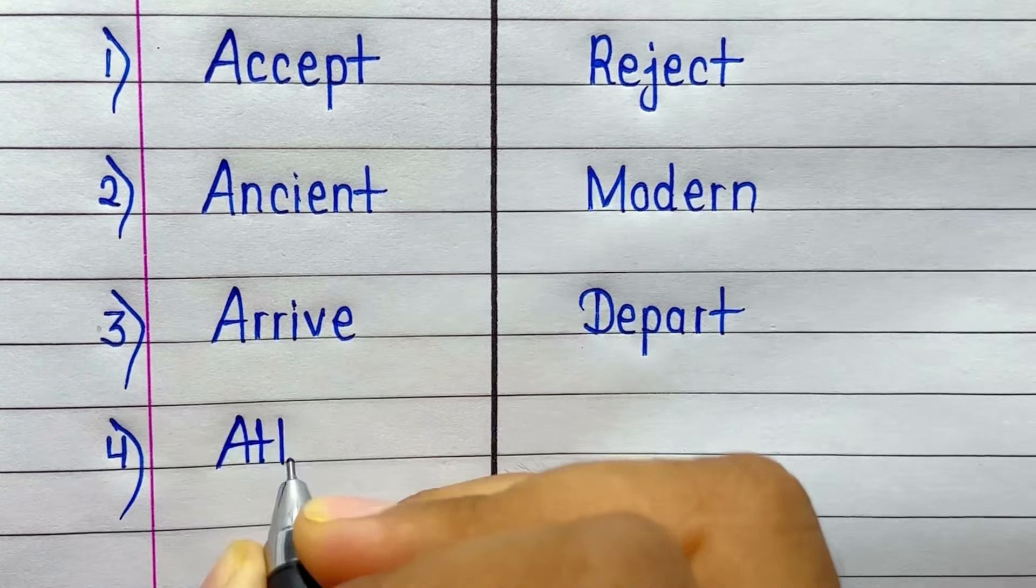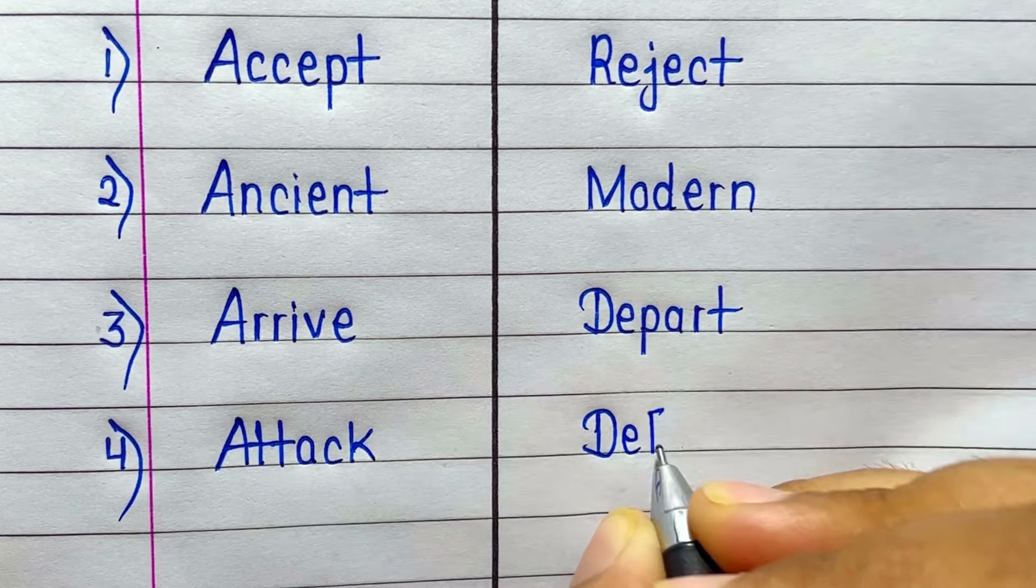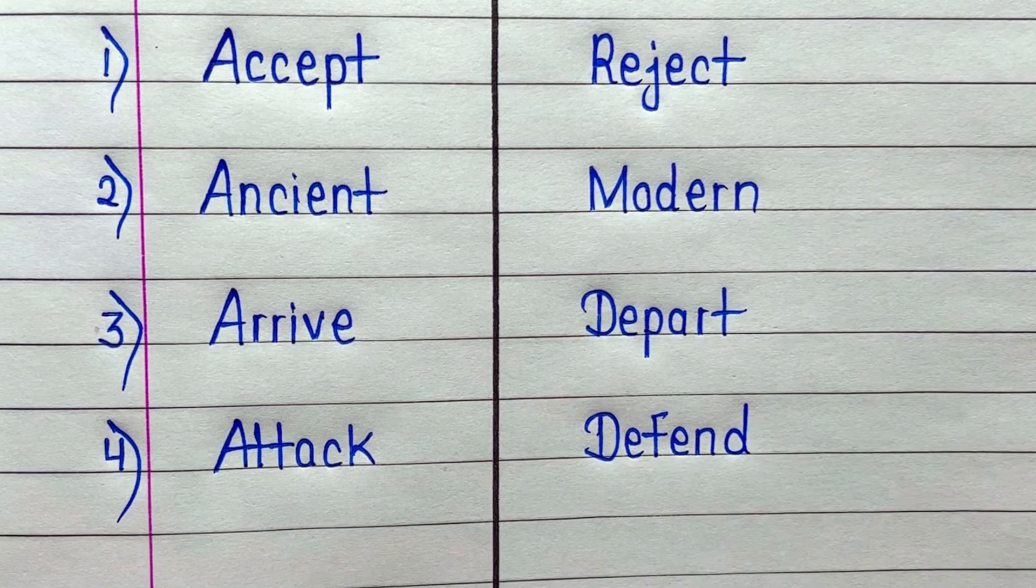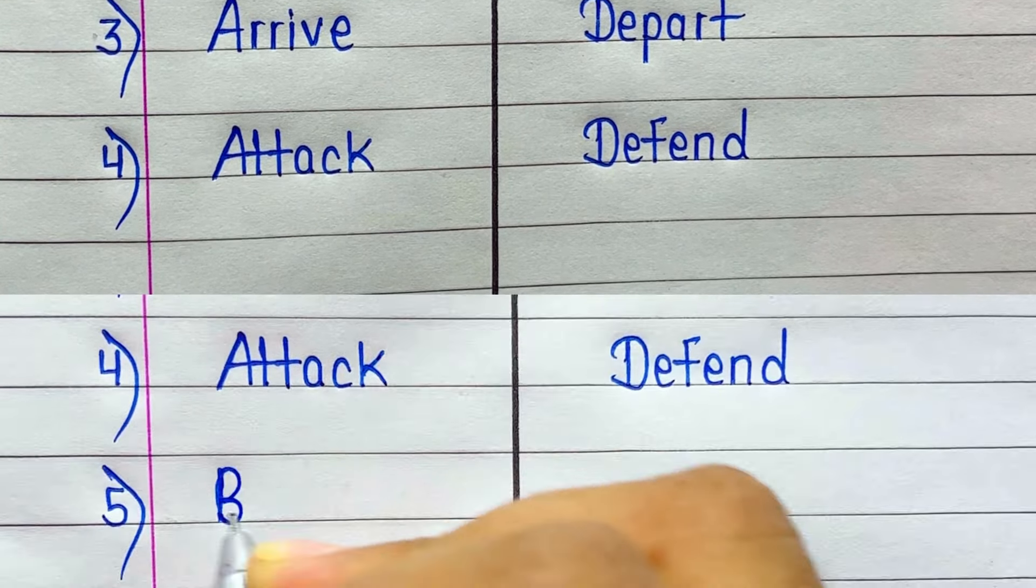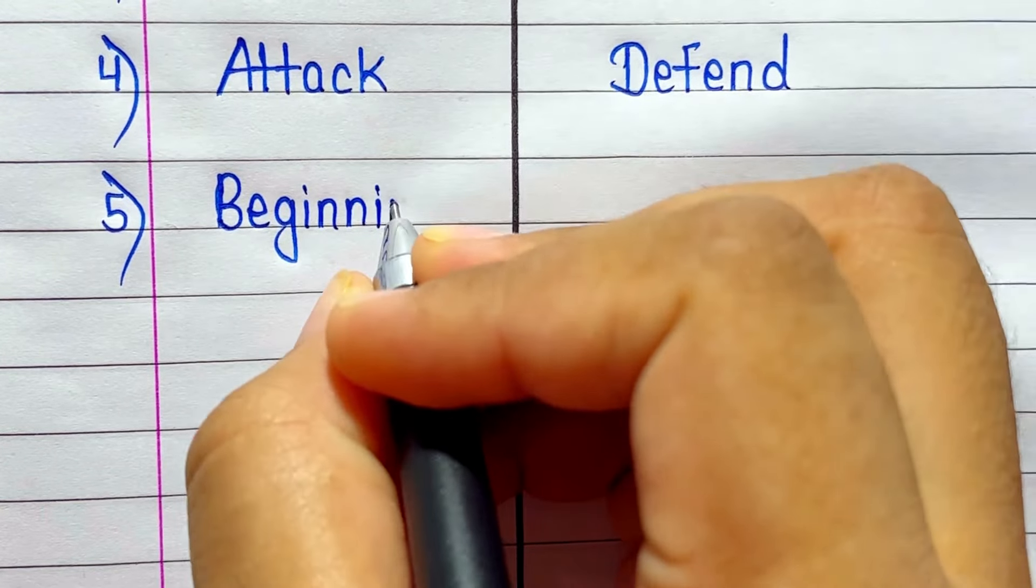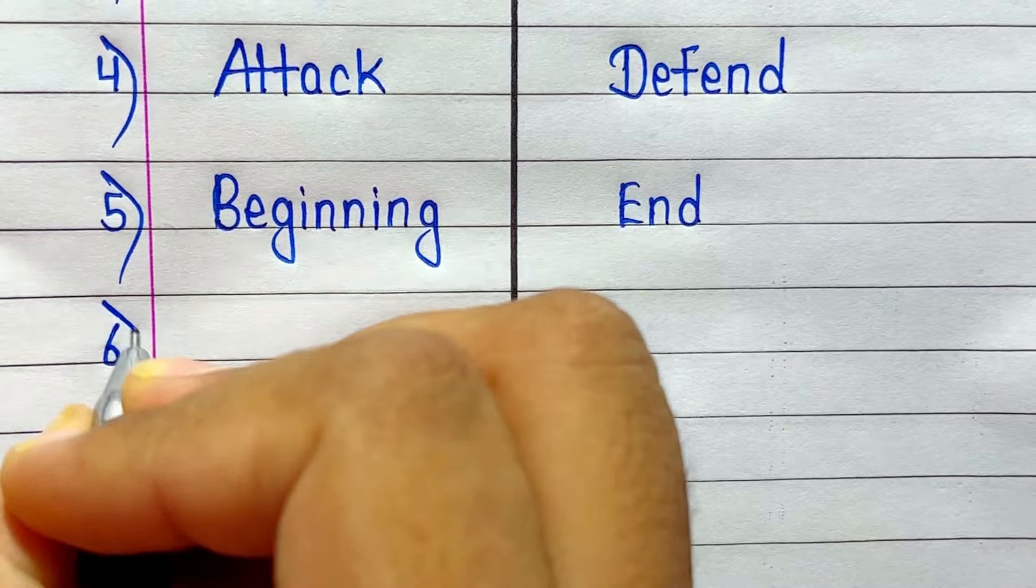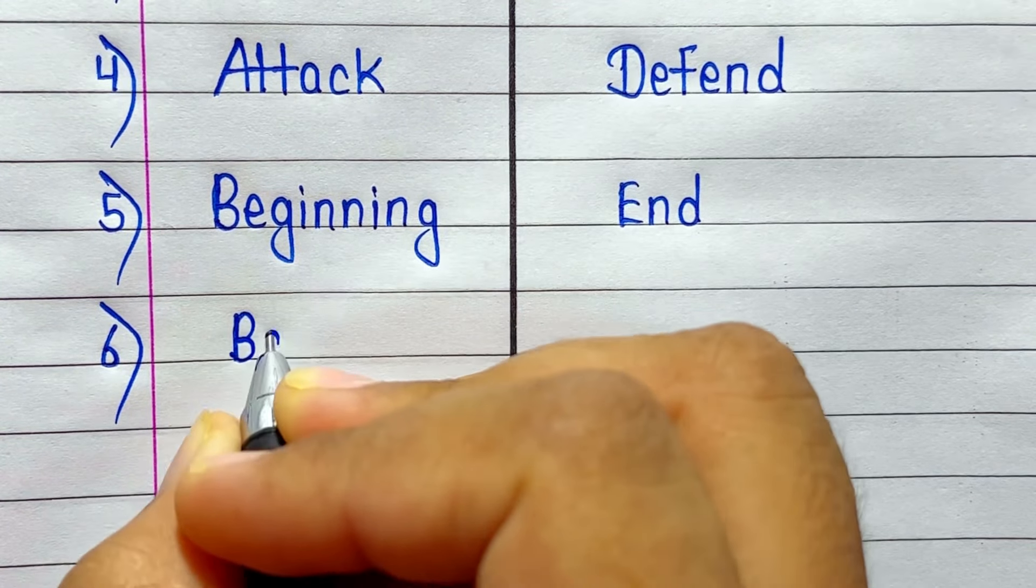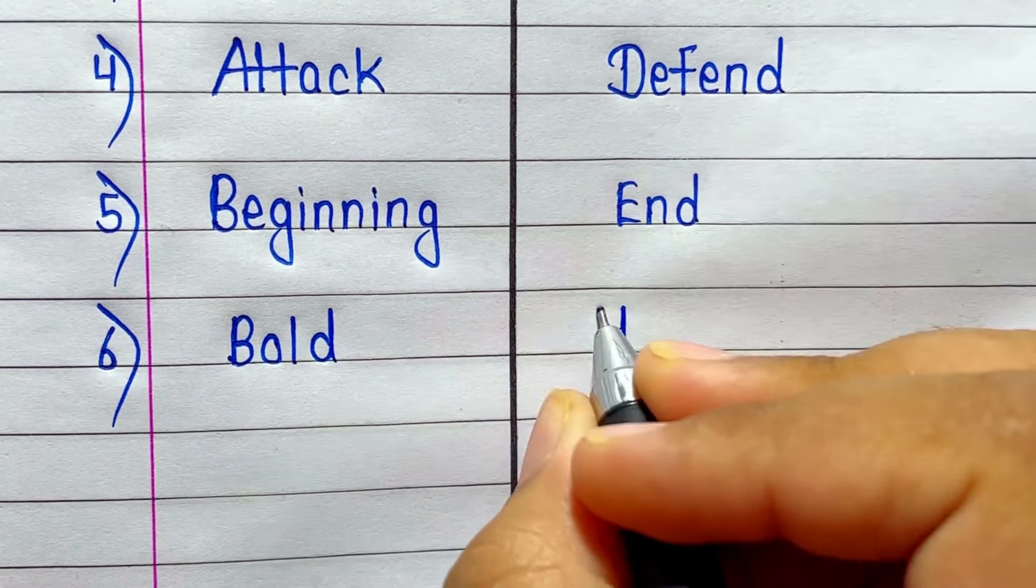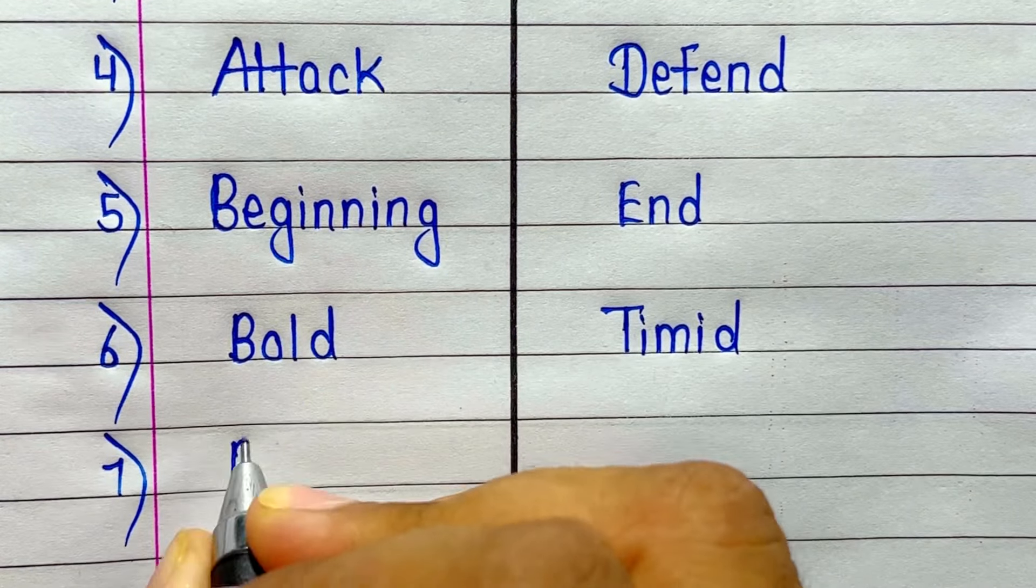Attack. Antonym of Attack is Defend. Beginning. Antonym of Beginning is End. Bold. Antonym of Bold is Timid.